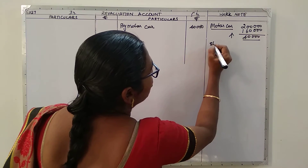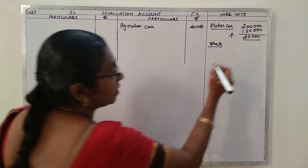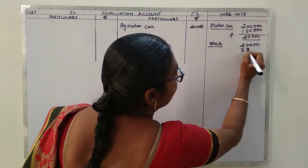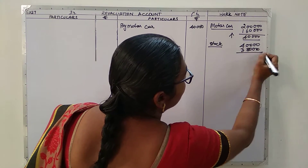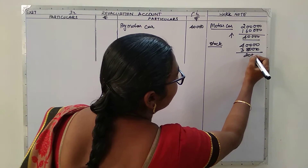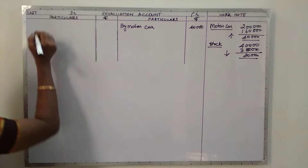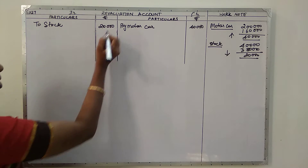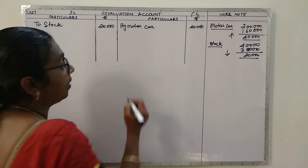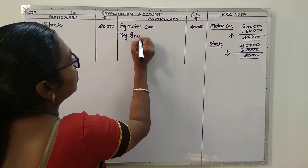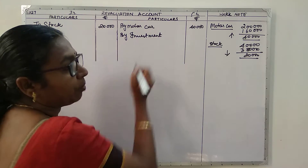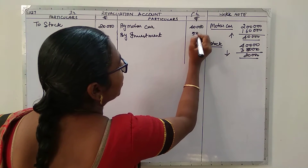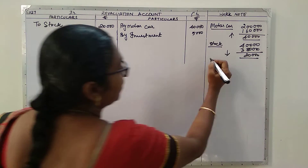Next, the stock value in the books is four lakh but now it has become three lakh eighty thousand, so there is a decrease of twenty thousand. We take this to the debit side - to stock, twenty thousand. Then we have unrecorded investment of five thousand which was not brought into the books of account, so this unrecorded investment is a credit to revaluation account.